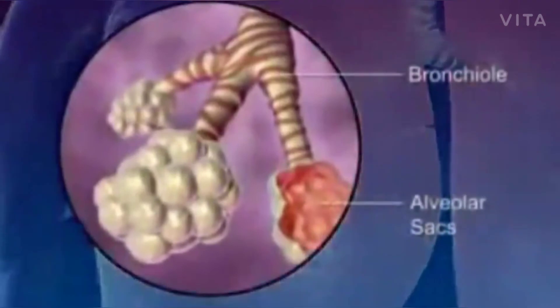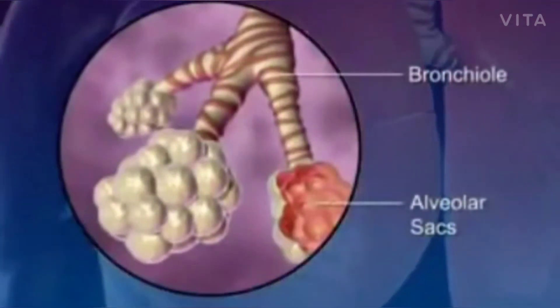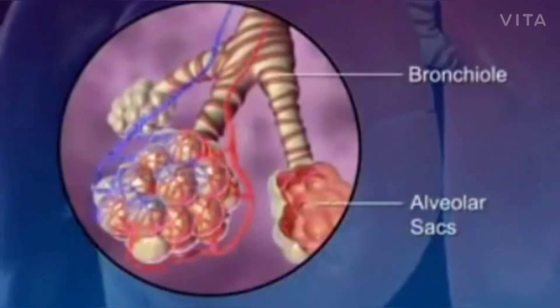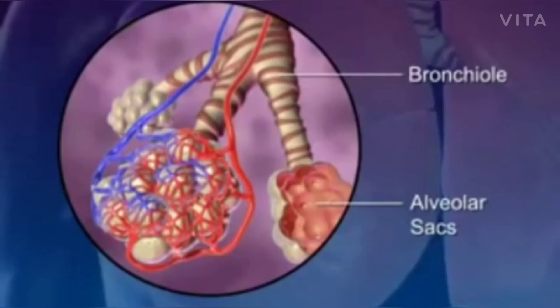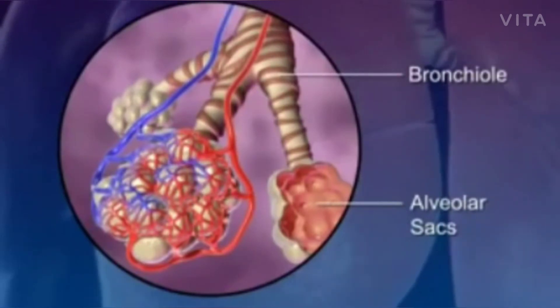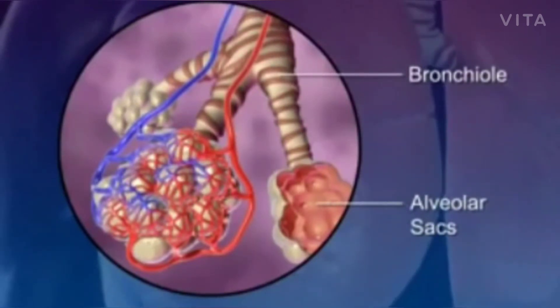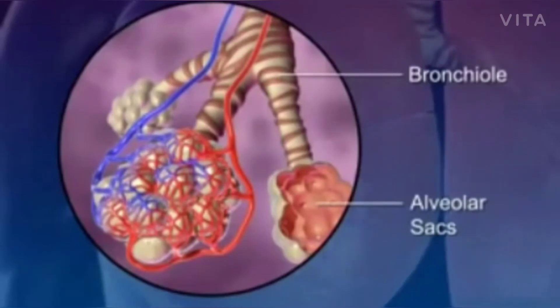At the end of each bronchiole are the alveolar sacs. The alveolar sacs are surrounded by blood capillaries and contain millions of single-layer alveoli cells where the gas exchange takes place.